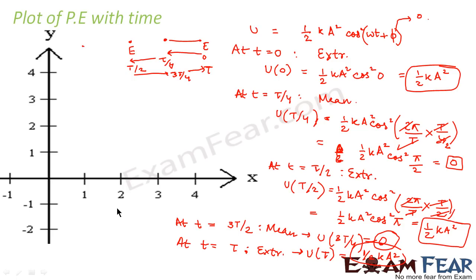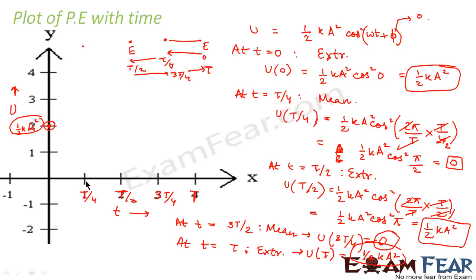Using these values, let us plot the graph. We take time along the x-axis and potential energy along the y-axis. At t equal to 0, potential energy is half K A square. At T by 4, it is 0. At T by 2, it is half K A square again. At 3T by 4, it is 0, and at T it is again half K A square. Joining these points gives a cosine curve.